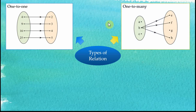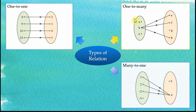The second one is called a one-to-many relationship. For one-to-many relationships, one object is mapped to more than one image. For example, one object is mapped to three images. This is one-to-many relations. The third one is called many-to-one. For many-to-one, more than one object is mapped to one image.